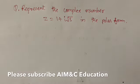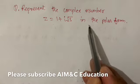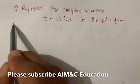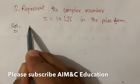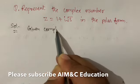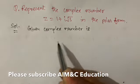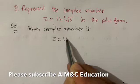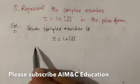As an example, let us take the question: represent the complex number z = 1 + i√3 in polar form. The given complex number is z = 1 + i√3.